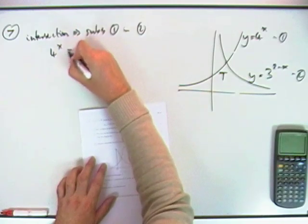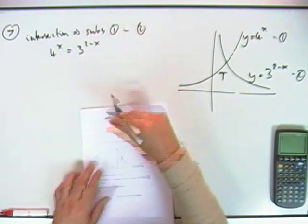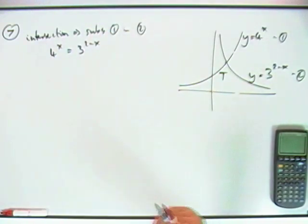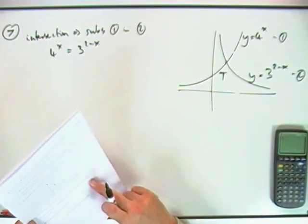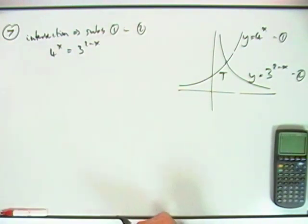So I'm going to have 4 to the x equals 3 to the 2 minus x. First thing you'll do is you'll log them down. Oh I've got a special, I might as well head for that. I want you to use A for this part, right.